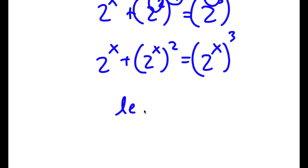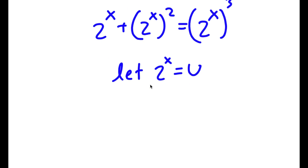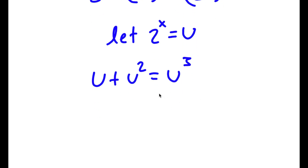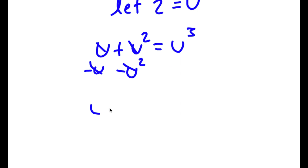Now I can let 2 to the power of x equal to the variable u. So if I replace 2 to the power of x with u, I get u plus u squared is equal to u to the power of 3. And if I subtract u squared and u on both sides, I get u to the power of 3 minus u squared minus u is equal to 0.